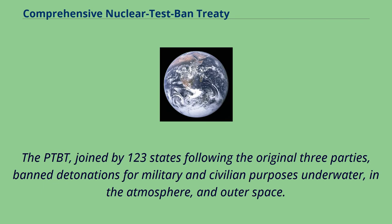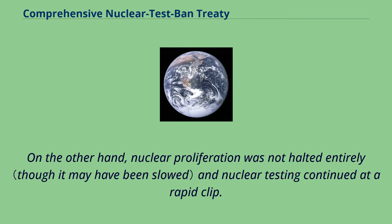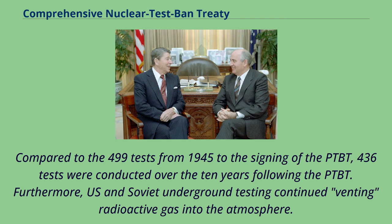The PTBT, joined by 123 states following the original three parties, banned detonations for military and civilian purposes underwater, in the atmosphere, and outer space. The PTBT had mixed results. On the one hand, enactment of the treaty was followed by a substantial drop in the atmospheric concentration of radioactive particles. On the other hand, nuclear proliferation was not halted entirely and nuclear testing continued at a rapid clip. Compared to the 499 tests from 1945 to the signing of the PTBT, 436 tests were conducted over the 10 years following the PTBT.